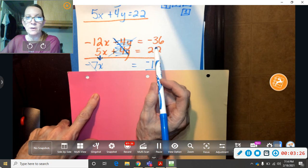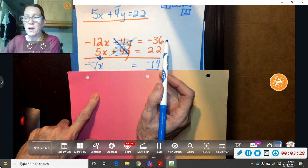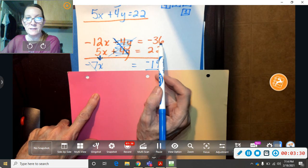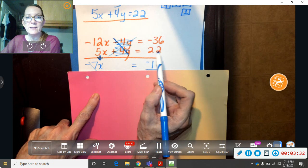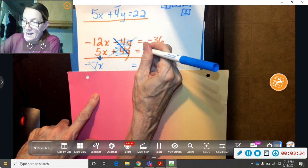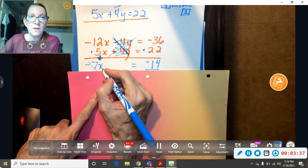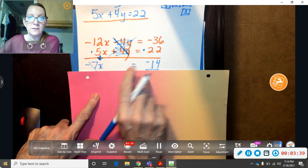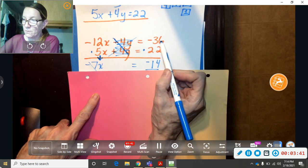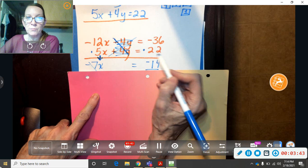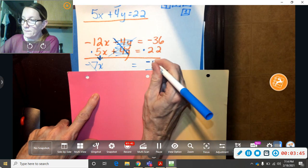So equals, and do this in a calculator, 36 and then the positive negative button to make it negative 36. Add it to 22. Now I didn't write add it, but you know when you're going down on these equations, you're adding. So 36 negative plus 22 gives you negative 14.